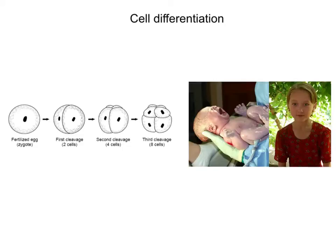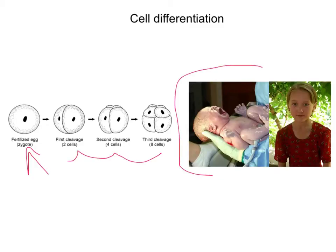Let's apply this to humans first. Humans start with one fertilized egg called a zygote. We come from one little cell, and that one cell is going to divide and divide and divide, and that's what's going to help us to grow.